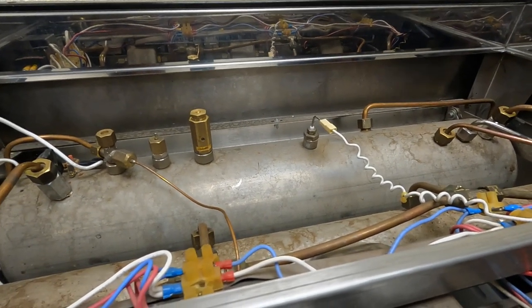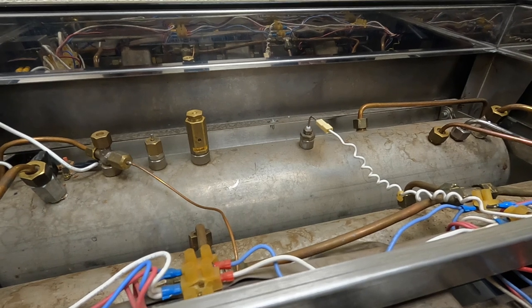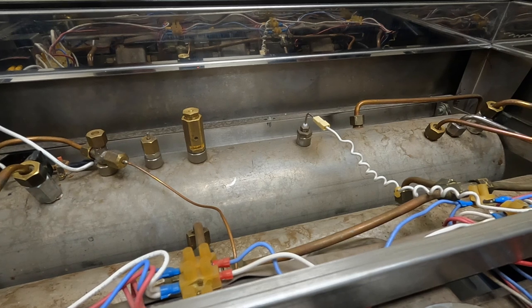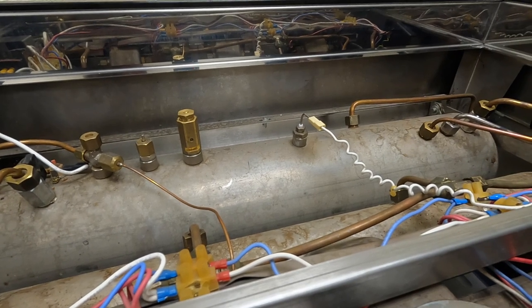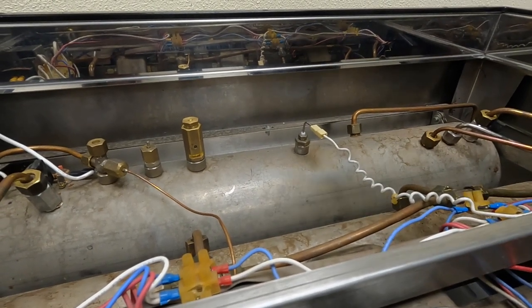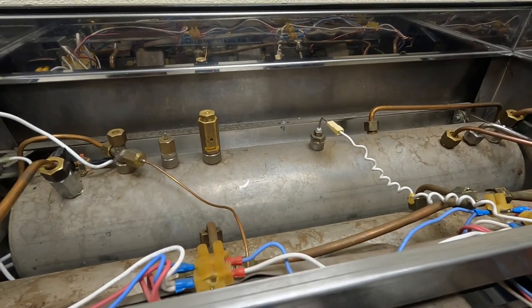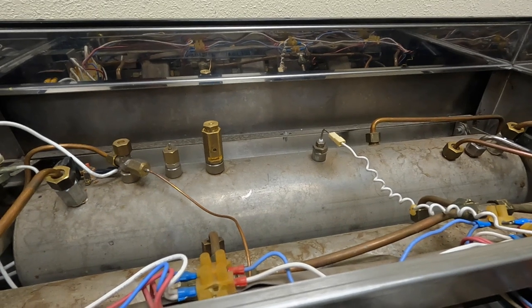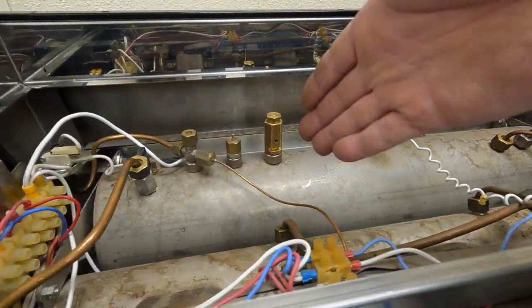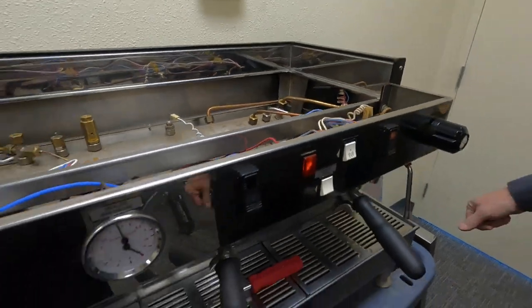On the Linea Classic, when you set the temperature on the brew boiler, that is the temperature for all groups. Even a four group? A four group, there will be two PID controllers. You'll have two, two-group boilers. One boiler will feed two groups and the other boiler will feed the other two. If this were a four group, these two would be adjusted by the left-hand side and your other two over here would be on the right-hand side.